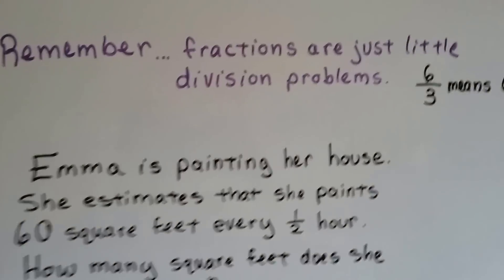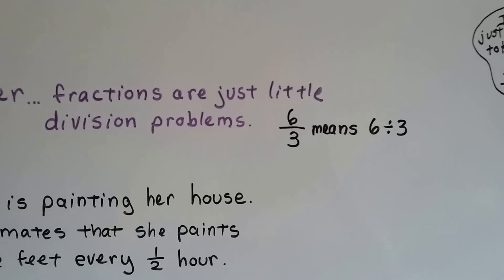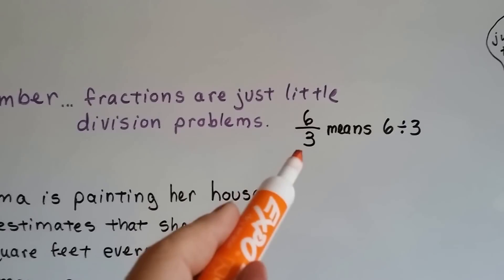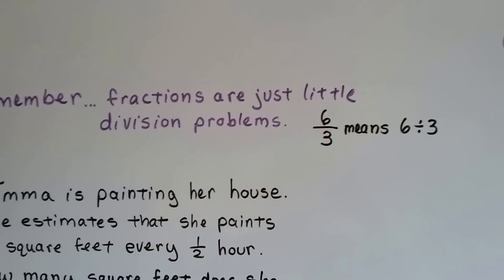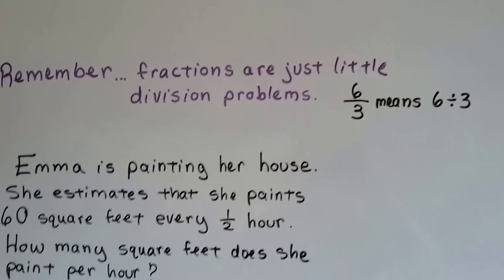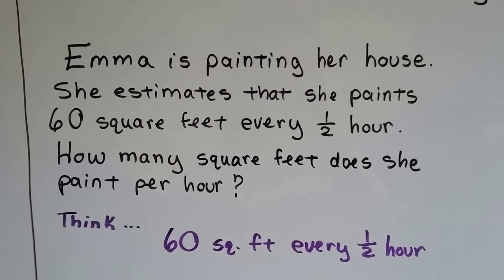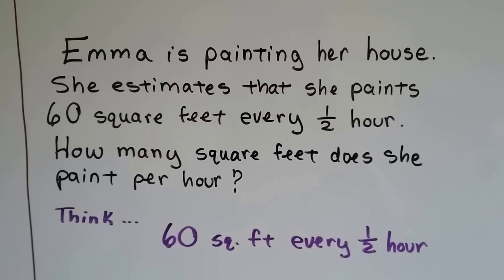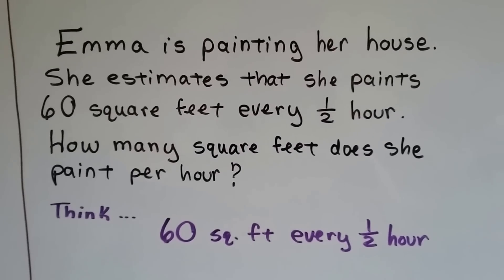Remember, fractions are just little division problems. If you saw six-thirds, we know to simplify it means to do six divided by three, which equals two. Emma is painting her house and she estimates that she paints 60 square feet every half hour. How many square feet does she paint per hour?